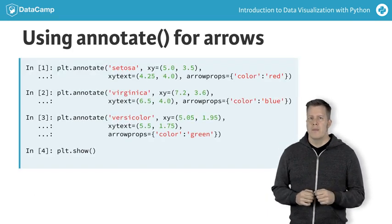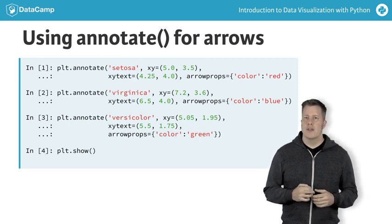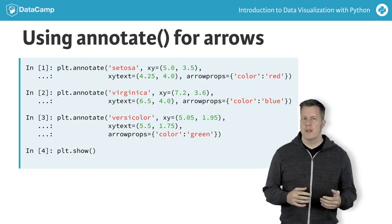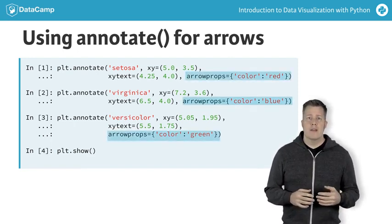This is the required code. Notice the specification of coordinates xy and xy text in the calls to annotate. It usually takes some experimentation to get the coordinates to make a visually pleasing plot. The dictionary arrow props is required to make the arrow appear.